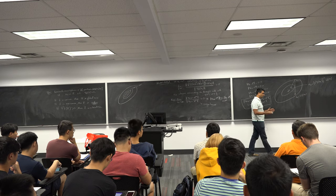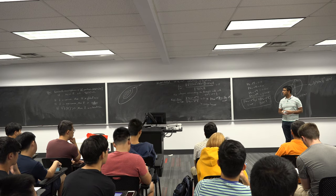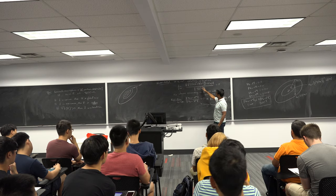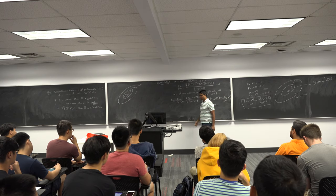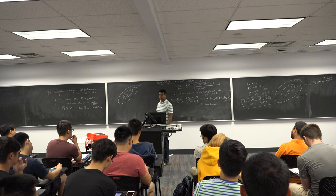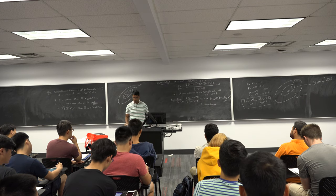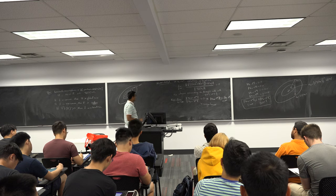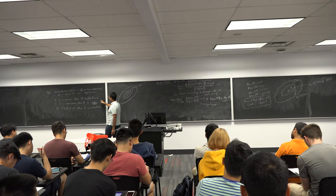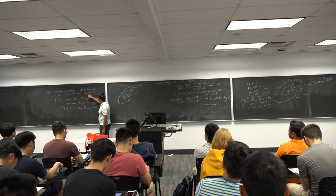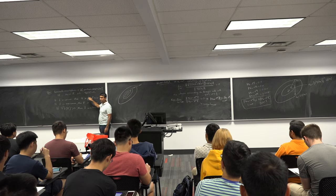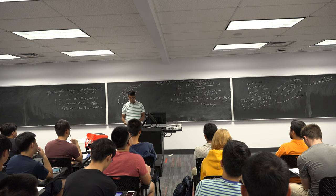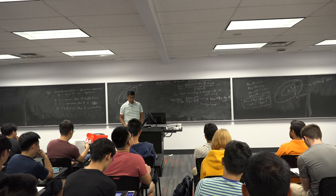For problems of reasonable size where the second derivative is easy to compute, you would like to use Newton's method because it converges very quickly to the optimal solution. You don't know whether it will converge to the optimal solution or not, since all we know is it will converge to a stationary point. If f is convex, then it will certainly converge to the optimal solution.